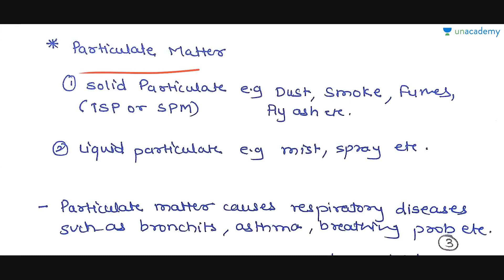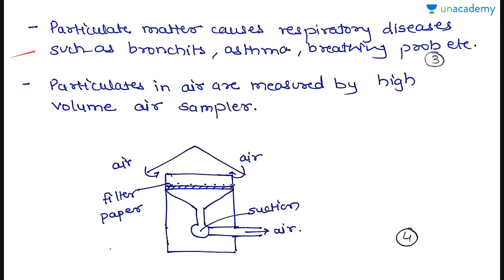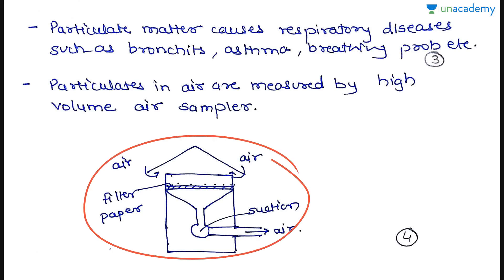We need to find the total average TSP in micrograms per cubic meter. Particulate matter is generally a primary pollutant, and it refers to everything emitted in condensed phase — that is solid or liquid phase. Solid particulates include dust, smoke, fumes, and fly ash. Liquid particulates include mist and spray. Particulate matter generally causes respiratory diseases such as bronchitis, asthma, and other breathing problems. Particulates in air are measured by high volume air samplers.